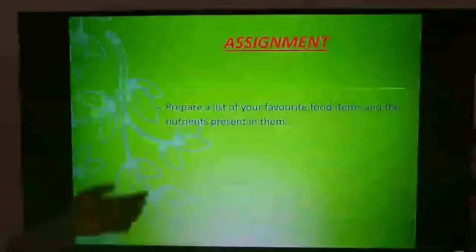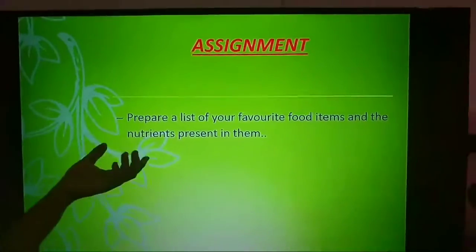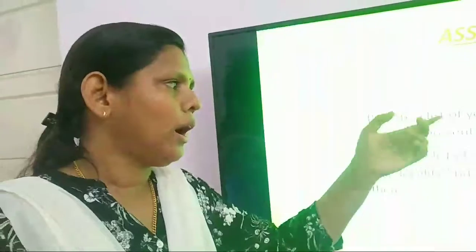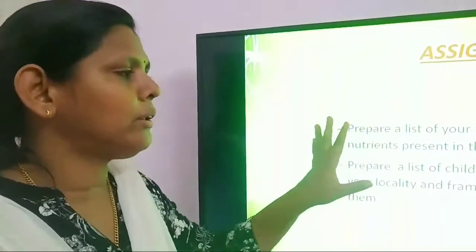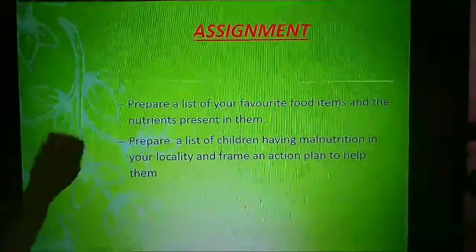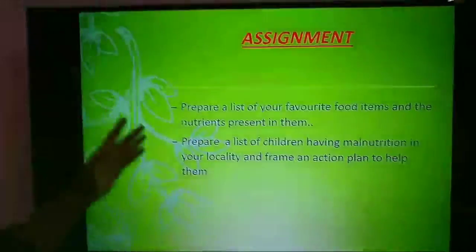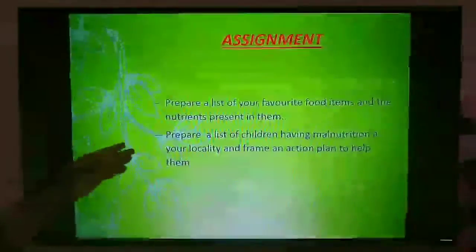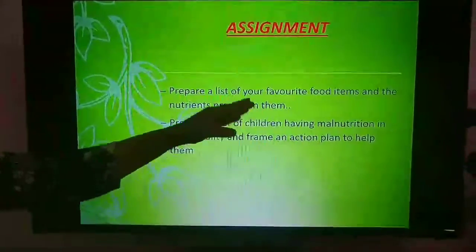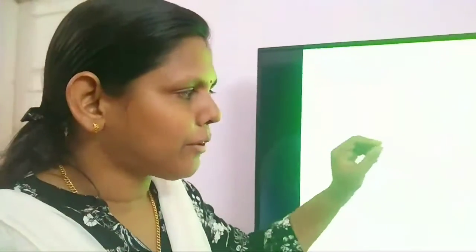There are two assignments for you from this topic. First, prepare a list of your favorite food items and the nutrients present in them — note it in your science activity book. After doing this, you may understand that some of your favorite food items may not have any nutrients, so you should give them up. Second, prepare a list of children having malnutrition in your locality and frame an action plan to help them. It is our duty to help them.